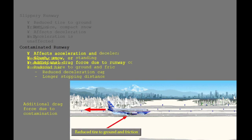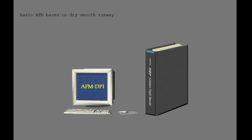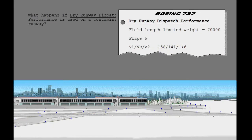Runway contamination also reduces the tire-to-ground friction and therefore affects the airplane's ability to decelerate and stop. Both JAA and FAA airplane flight manuals contain field length limited takeoff weights based on a dry, smooth runway with maximum manual braking, and do not include credit for the use of reverse thrust. To illustrate why performance adjustments are used, let's look at the effect of using normal dry runway field length limited takeoff weights when the runway is contaminated with slush.